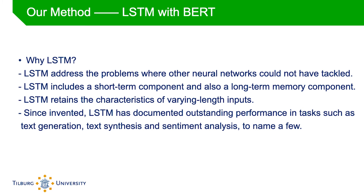Recurrent neural networks address this problem by taking inputs of various lengths and introducing a hidden cell serving as a kind of memory. LSTM, one variant of RNN, extends the idea by including both a short-term and a long-term memory component while retaining variable-length input. Therefore, LSTM is a powerful tool for sequential data, capturing the dependence of one word on others that preceded it. Since its invention, LSTM has shown outstanding performance in tasks such as text generation, text synthesis, and sentiment analysis.